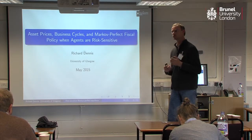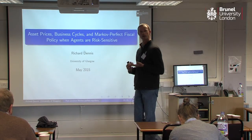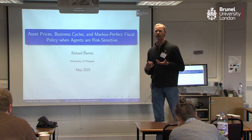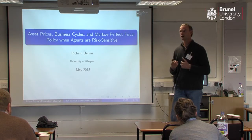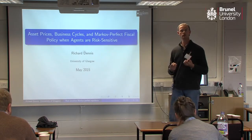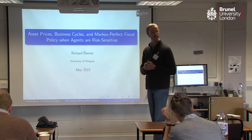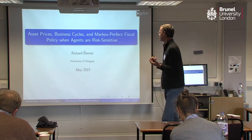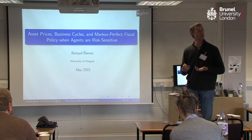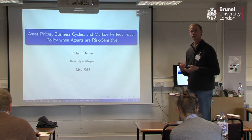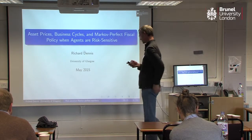So I've got households in the economy and they're going to have risk-sensitive preferences. These preferences can have implications not only for the decision rules but also for the business cycle, and they may have implications for how policy ought to be conducted. Collectively they may also have implications for asset prices. Asset prices and returns on assets are going to be one of the more interesting aspects of this analysis.